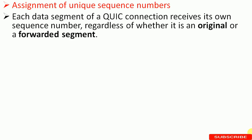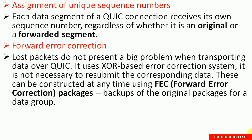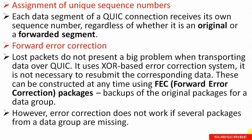Next is the assignment of unique sequence numbers. Each data segment of the QUIC connection receives its own sequence number, regardless of whether it is an original or a forwarded segment. The next advantage is forward error correction (FEC). Lost packets do not present a big problem when transporting data over QUIC, as it uses an XOR-based error correction system. Missing data can be reconstructed at any time using FEC packages. However, error correction does not work if several packets from a data group are missing — if multiple packets are missing, reconstruction is not possible.